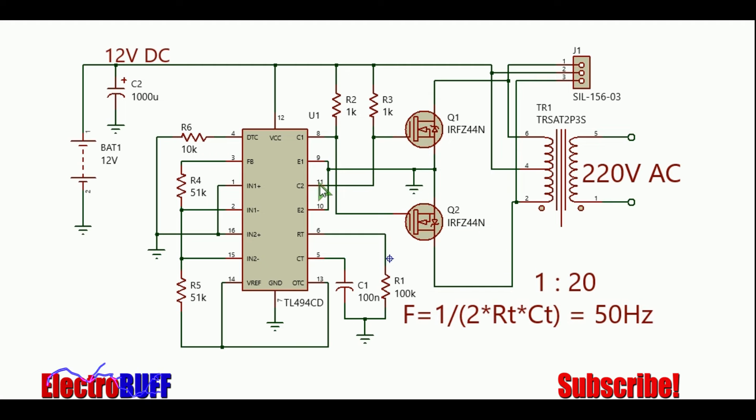The output transistor drivers, the open collectors are pin 8 and 11 and the emitters are pin 9 and 10. Ground the emitters and the open collectors will be used as the gate drive for the output MOSFETs. When the first transistor is turned on, pin 8 will be ground but pin 11 will be high since the second transistor will be off, and so the MOSFET Q1 will conduct.